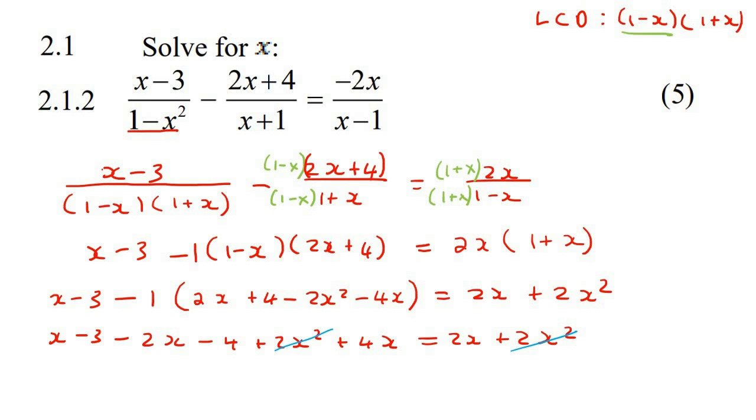So I'm going to take all the x's to the left, and I'm going to take all the numbers to the right. So on the left, we'd have x - 2x + 4x - 2x.